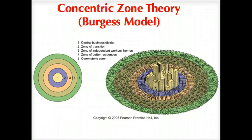The second ring, the purple zone, is the zone of transition, where you might see light industry or industrial areas mixed with low-income or older, less viable housing — oftentimes tenement housing. The third ring becomes more single-family, independent working-class homes, where you might have blue-collar families, new immigrants, or singles. Moving beyond that, you get into more residential areas, and further yet into the fifth ring — the commuter zone — you're basically out in suburbia.